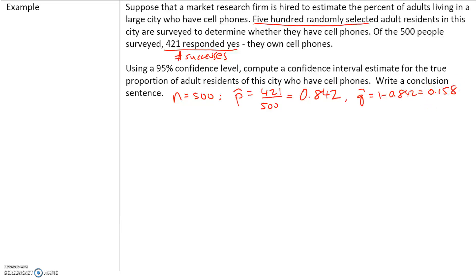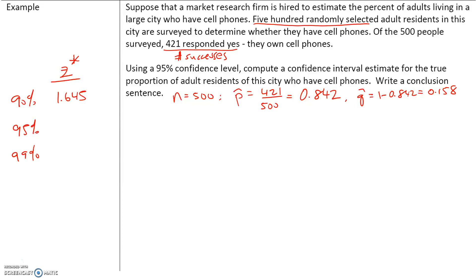And our sample size n is 500. We need to construct a 95% confidence interval. Recall that the three most common confidence levels are 90%, 95%, and 99%. Here are the critical values: for 90%, the critical value is 1.645; for 95%, it's 1.96; and for 99%, it's 2.575. Keep these in mind because we will be using these over and over again.